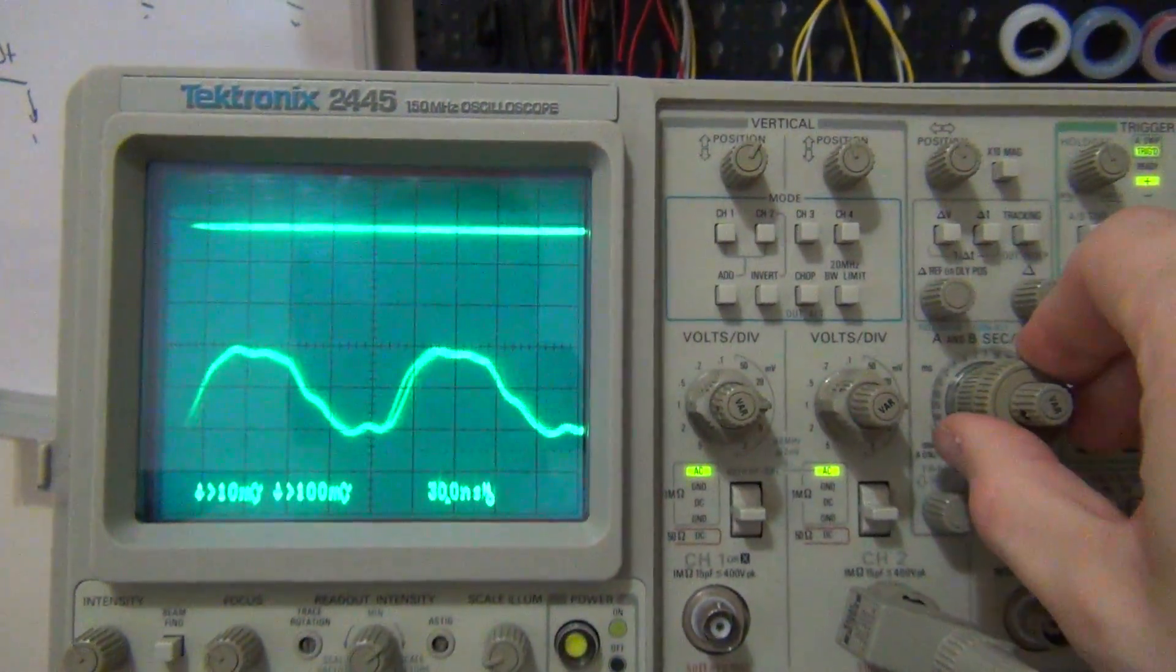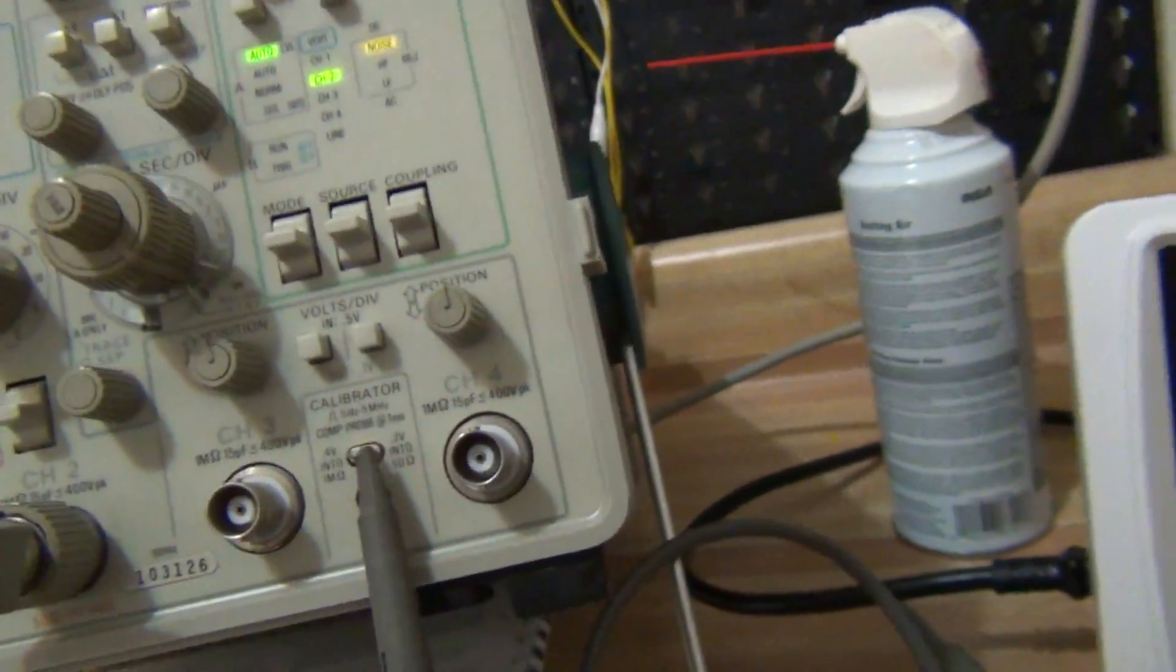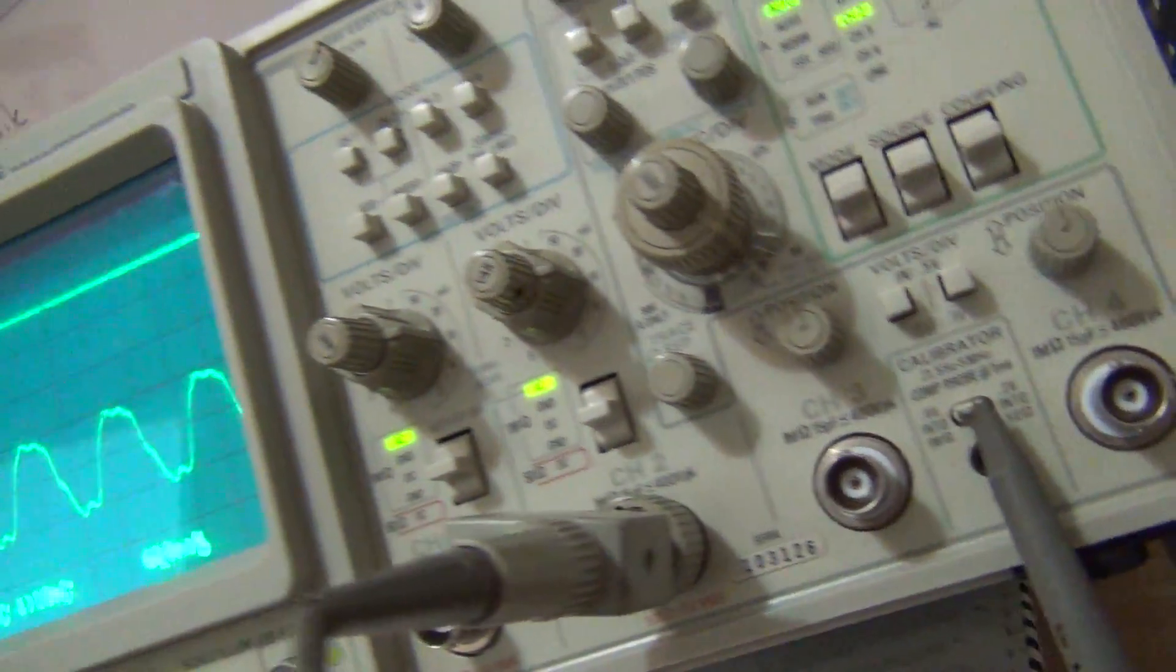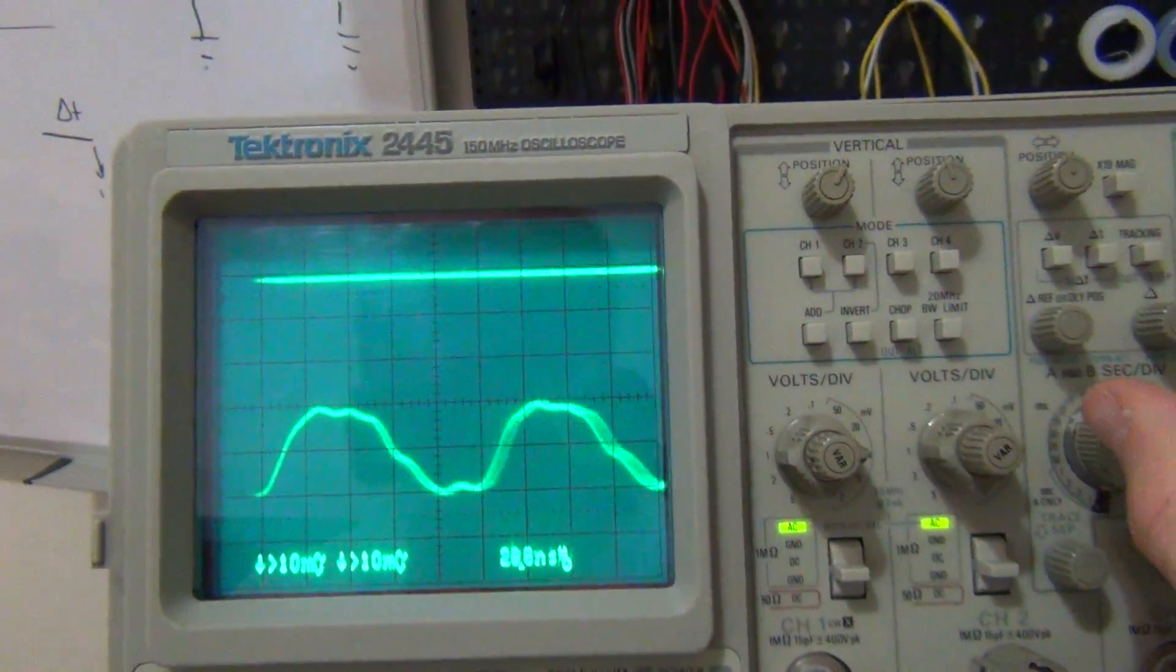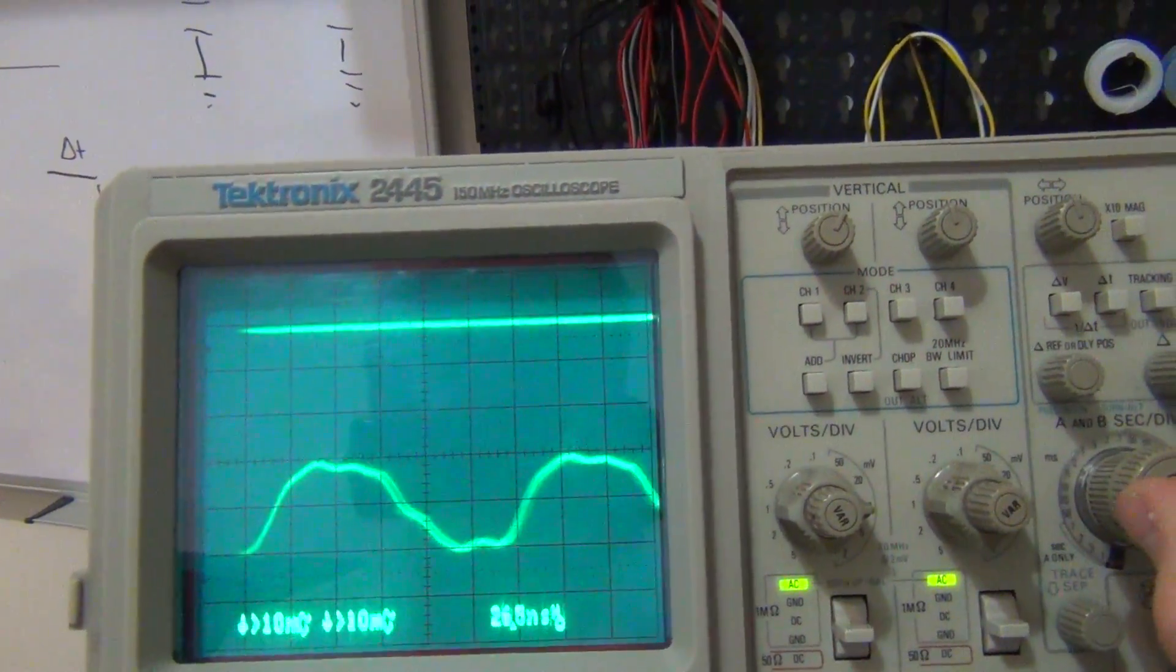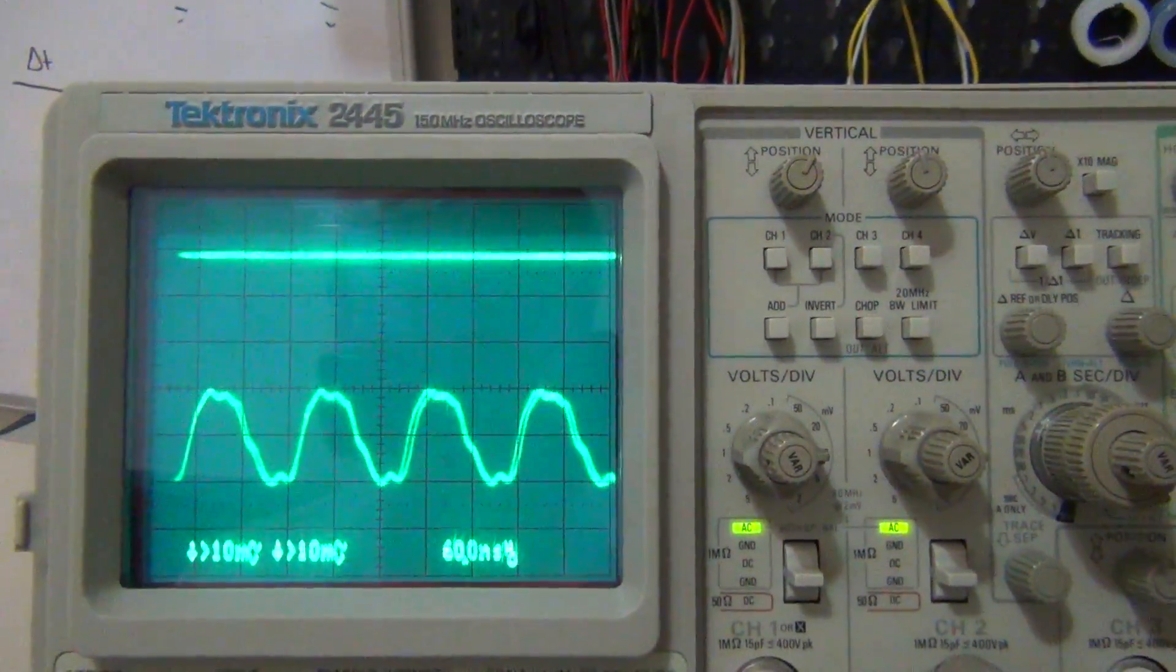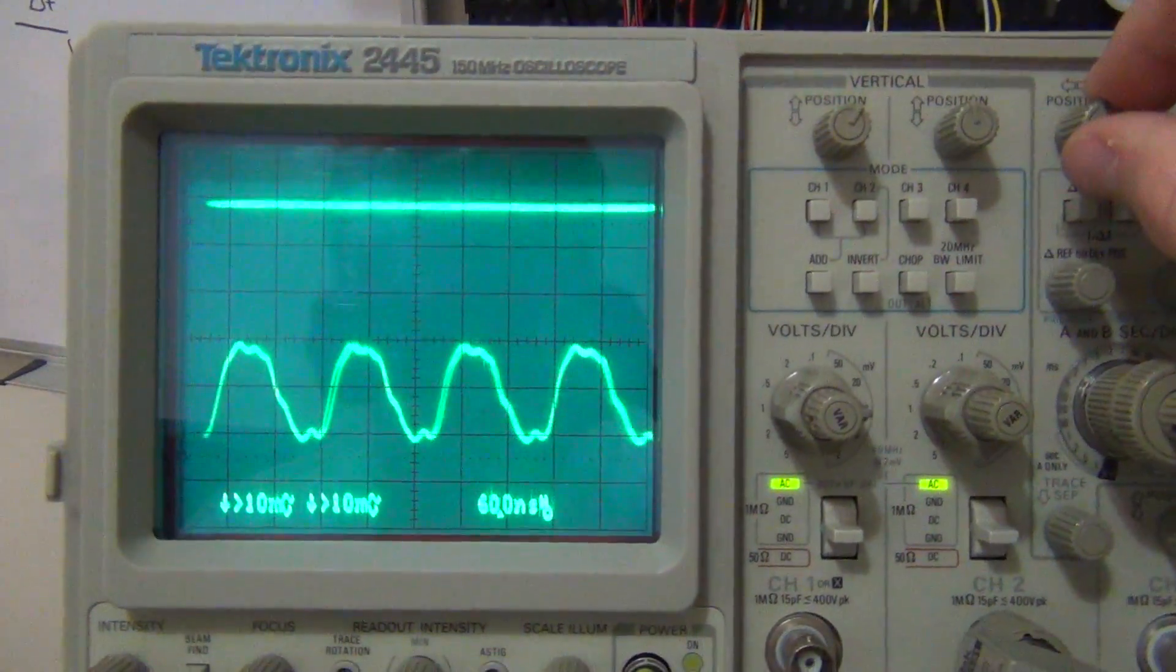So that if I am at this right now, what am I at? I'm at 20 nanoseconds per division. And it seems the image is centered where it ought to be, but it's jittering like mad.